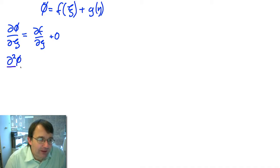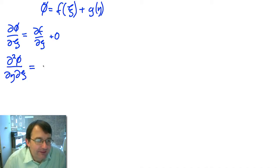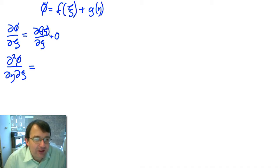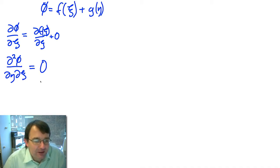Now I'm going to differentiate with respect to eta, giving partial squared phi by partial eta partial psi. Since f is a function of psi only, differentiating it with respect to eta — keeping psi constant — means f is a constant, so this is equal to zero. We've got a very nice simple partial differential equation, but it's in terms of eta and psi, which isn't particularly useful. We want to get it in terms of x and t, so we need to do a transform from eta and psi into x and t.